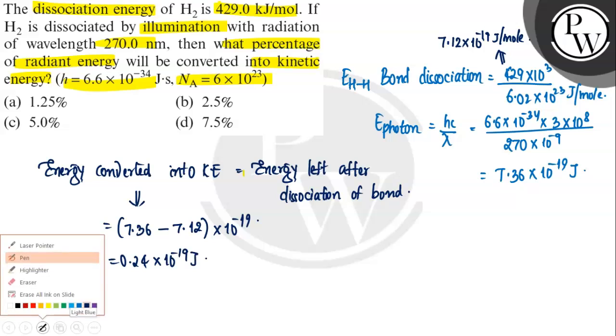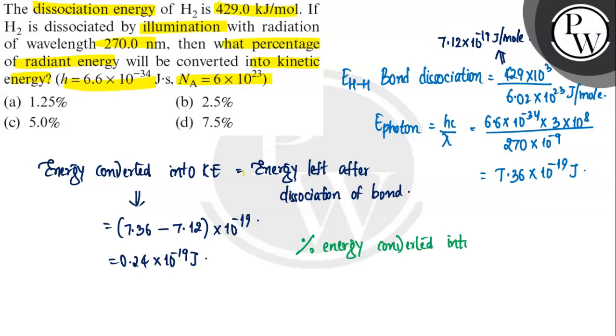Toh hume percentage chahiye thi. So percentage energy converted into kinetic energy, so this will be equal to 0.24 into 10 power minus 19 divided by 7.36 into 10 power minus 19 into 100. So iski value mil jayegi 3.2 percent. Lekan hume options meh nahi diya gaya, lekan humari answer hogi 3.2 percent. This is the correct answer. I hope you understand it well. All the best.